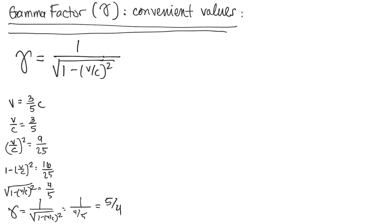So we have this convenient fact that if your velocity is 3 fifths of the speed of light, gamma is 5 fourths. And repeating that process, you can see that if the velocity is 4 fifths c, then you're going to find that gamma is 5 thirds.